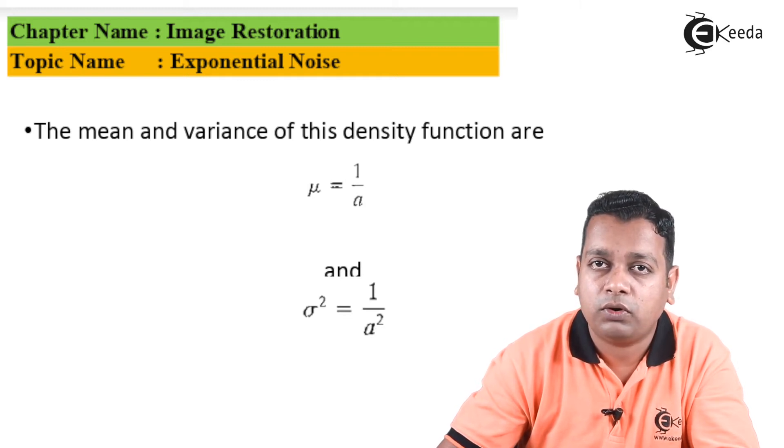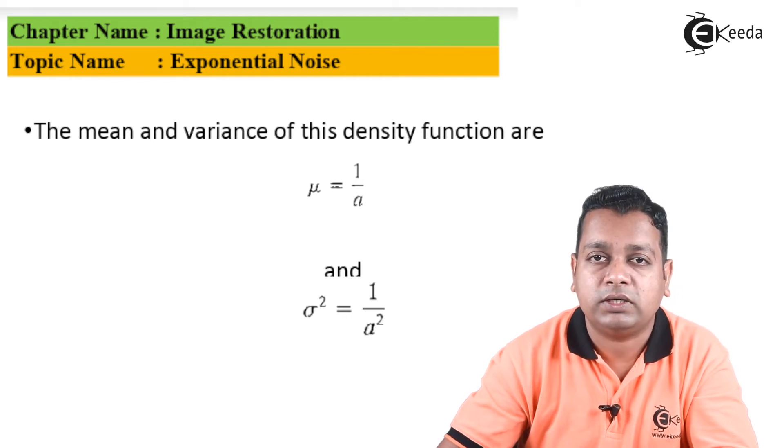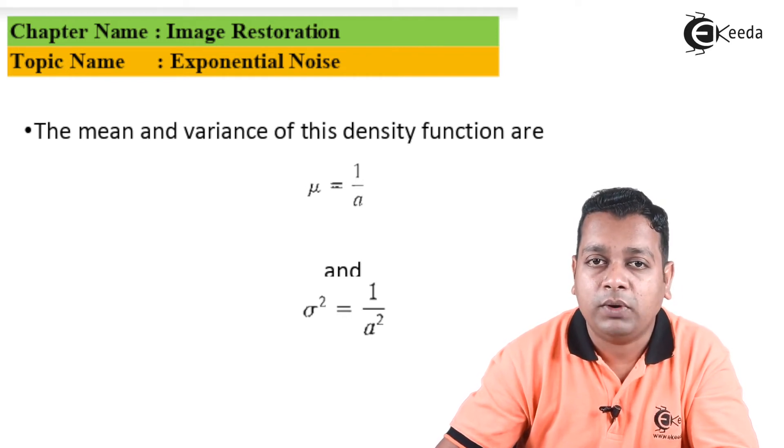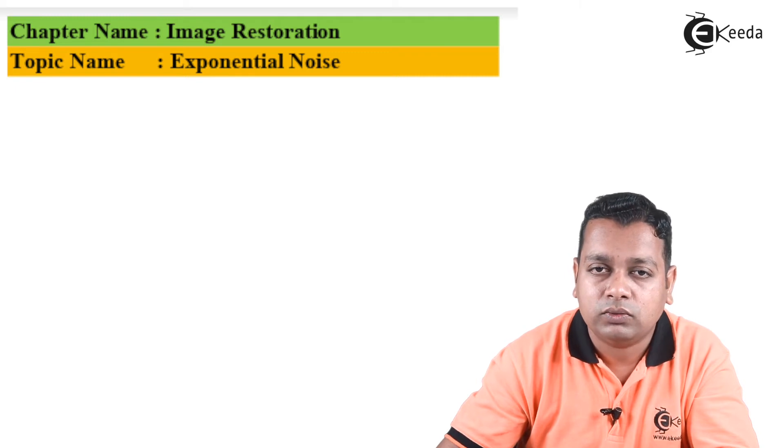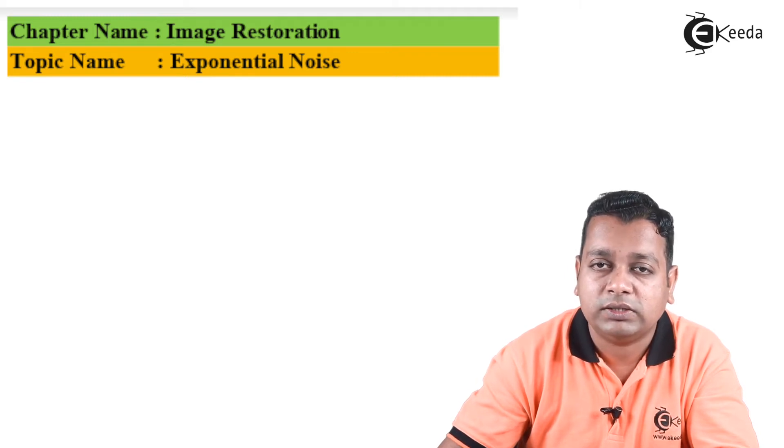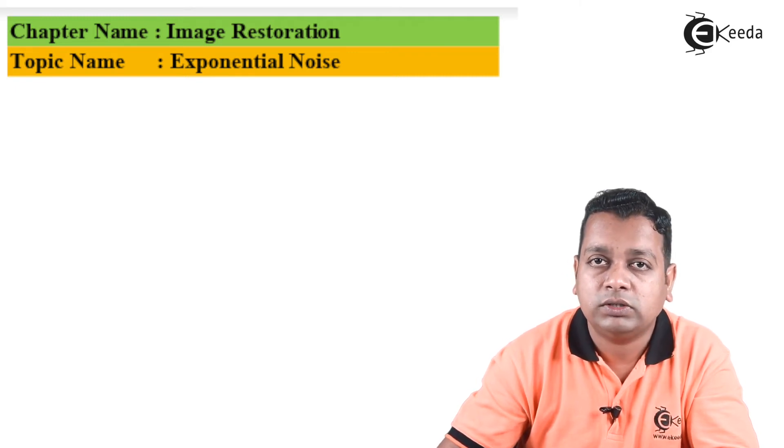These were the very important two parameters. Now it's time to show you the graphical representation, plotting the PDF onto the random variable. The curvature is very simple—it has exponential nature. It actually starts at a at the origin here and goes on exponentially decreasing like this.